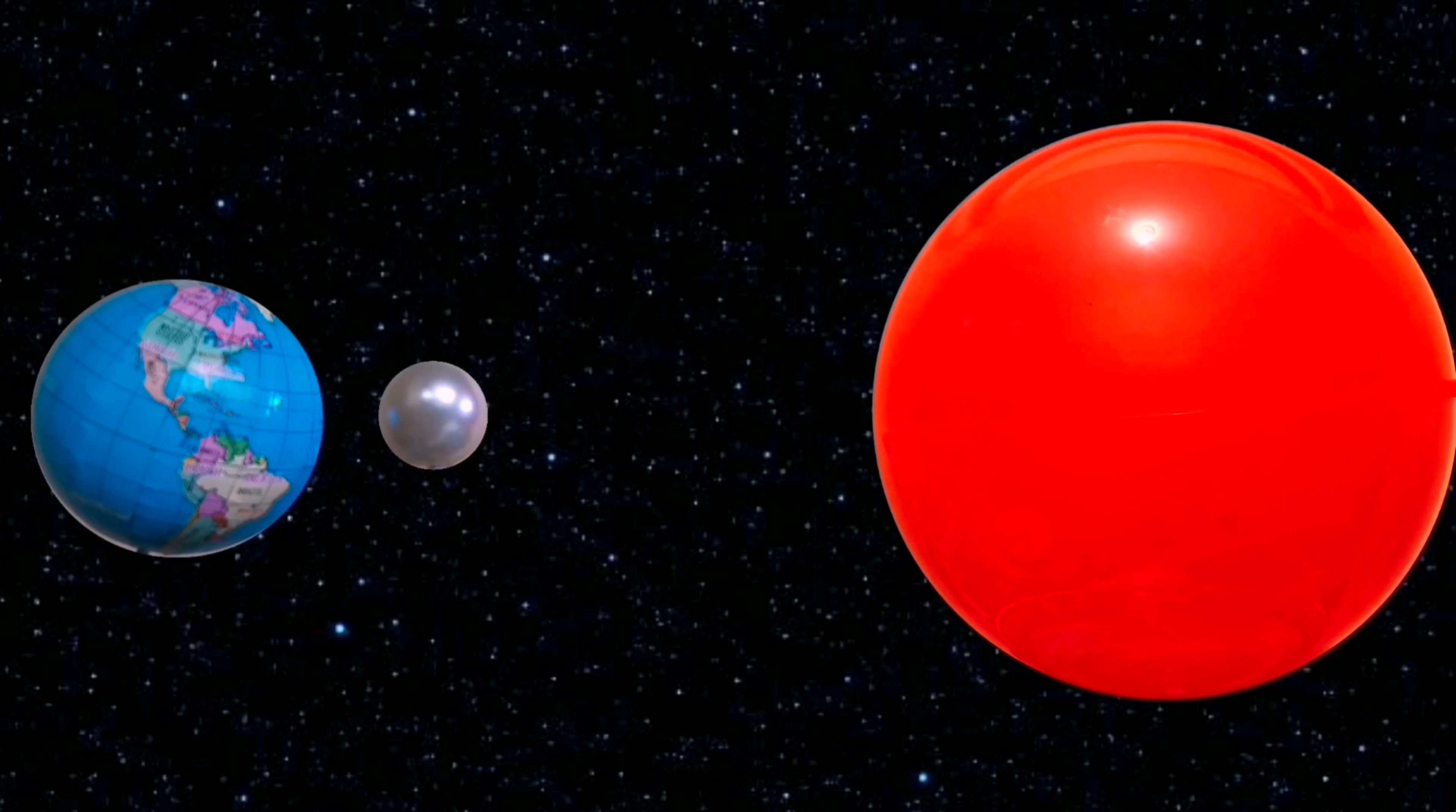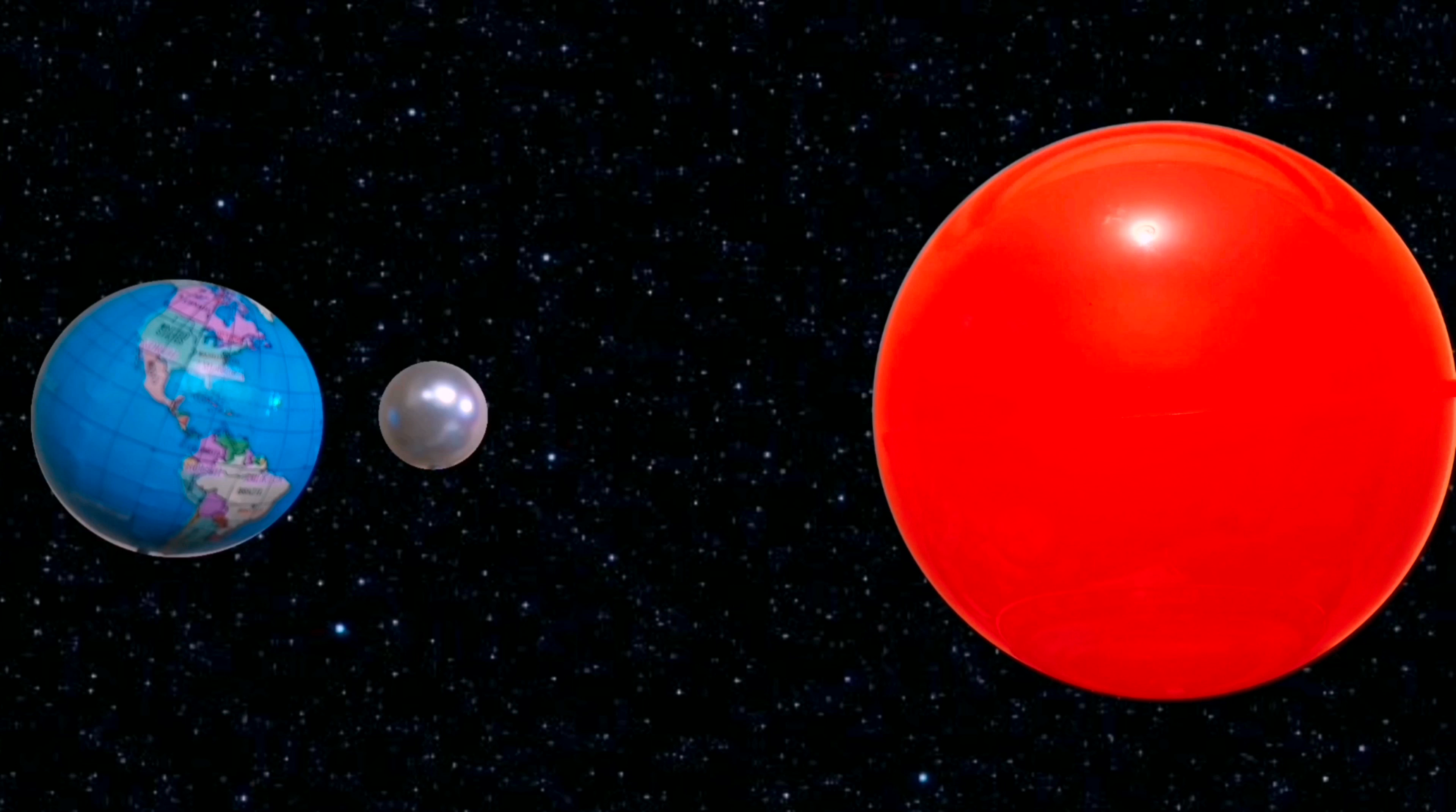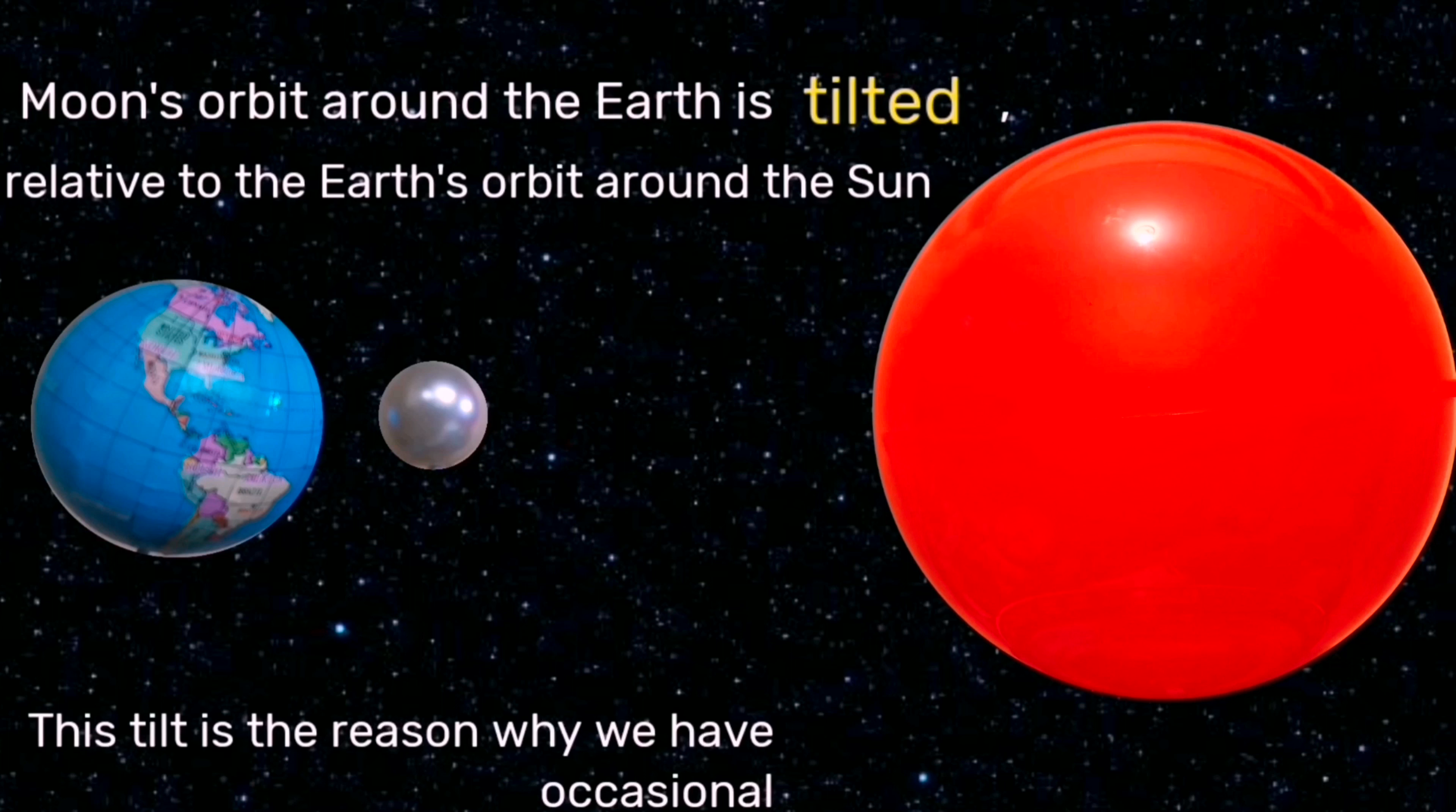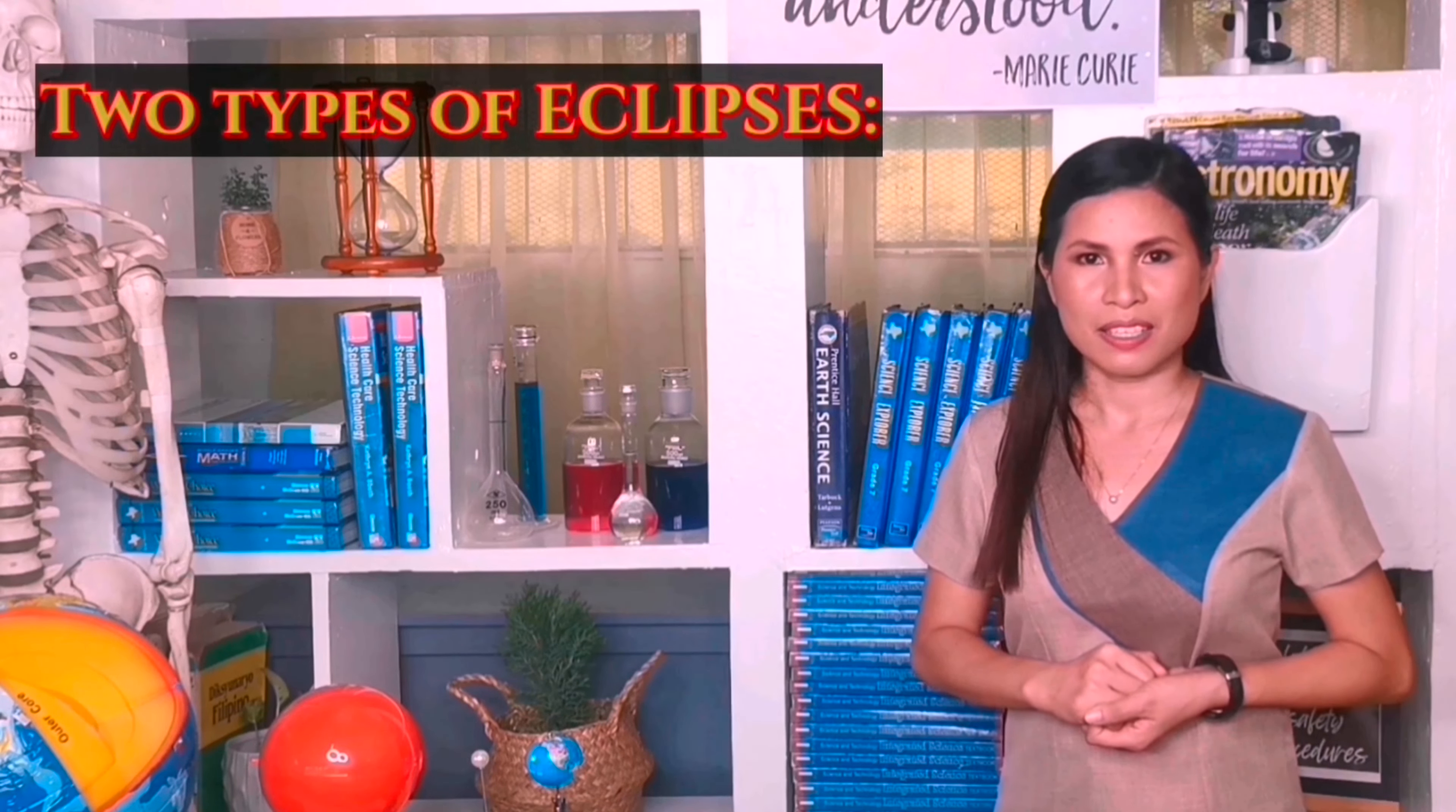Anywhere from 4 to 7 times a year, our Earth, Sun, and Moon line up just trying to create a cosmic-scale shadow show known as an eclipse. The moon's orbit around the Earth is tilted relative to the Earth's orbit around the sun. This tilt is the reason why we have occasional eclipses.